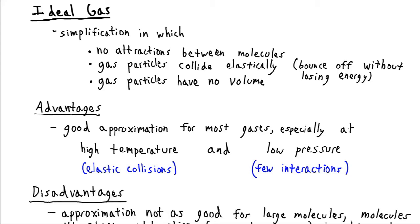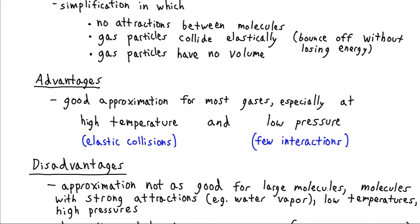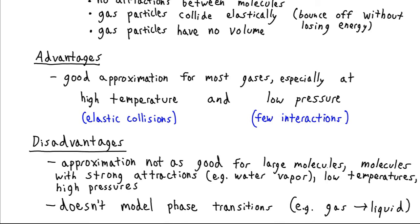There are some disadvantages. The ideal gas model is not as good an approximation if our molecules are large or if they have very strong attractions — water vapor is an example of something with strong internal attractions between molecules. It doesn't work as well at low temperatures, where molecules are very close together and don't have the energy for highly elastic collisions, or at high pressures where molecules are again very close together. It also cannot model phase transitions, such as where a gas converts into a liquid or solid.